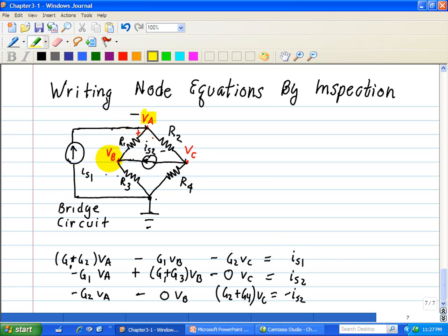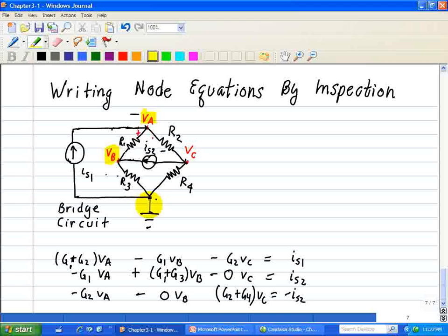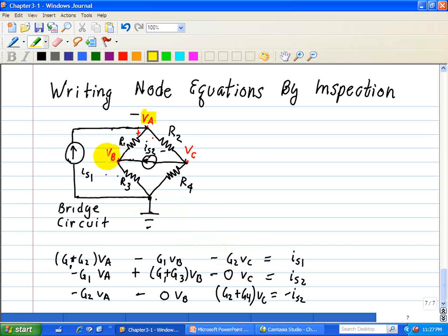Node B, so we see here what's connected to node B. We see it's R1 and R3, so we have G1 plus G3 times VB. What's connected to the opposite of R1? And we see it's minus G1 VA. And then we see what's connected to the opposite of R3, and we see it's a zero or reference node. Now what's going into node B? We see it's IS2, and we put IS2 in here.